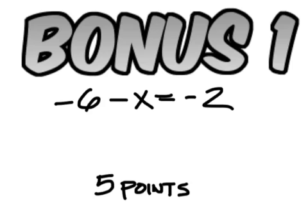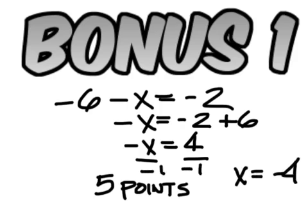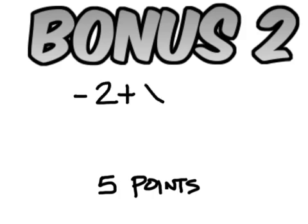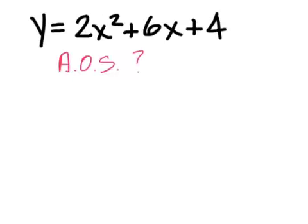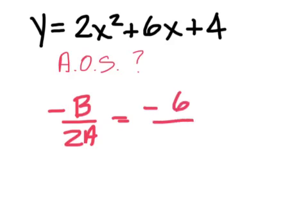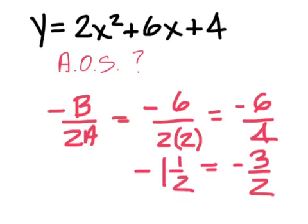For the bonus, negative x equals negative 2 plus 6, so negative x equals 4. Divide both sides by negative 1, so x equals negative 4. Bonus number 2 is negative 2 plus x equals 3, so x equals 3 plus 2, which is 5. For this one I just need the axis of symmetry. The axis of symmetry is negative b over 2a. The b is 6 and the a is 2, so negative 6 over 4 can reduce — it's not your final answer in that unsimplified form.